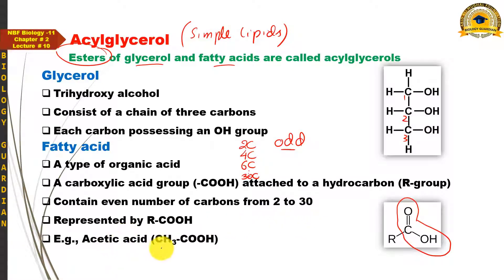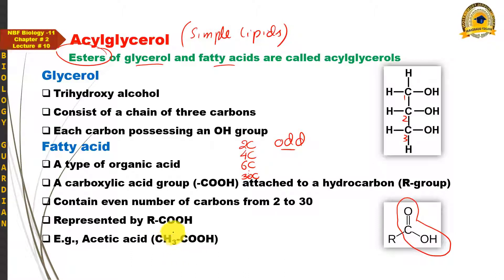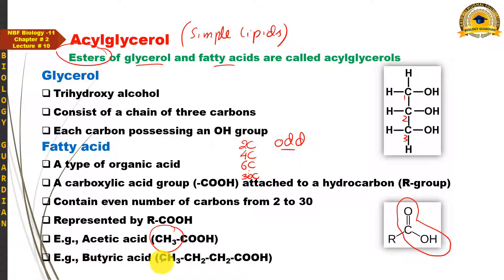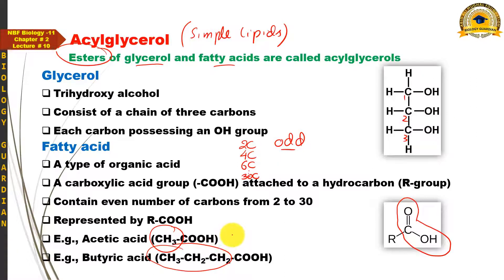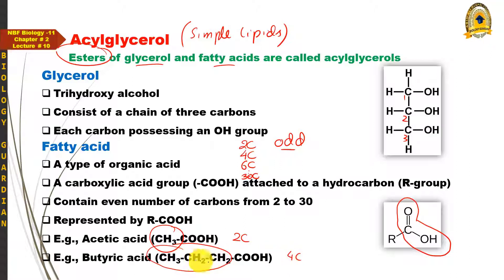Fatty acid کی simple examples دیکھیں: سب سے simplest fatty acid میں two carbon atoms ہوتے ہیں اور اس کی example ہے acetic acid۔ Acetic acid میں ایک R group ہے اور اس کے ساتھ carboxylic acid group ہے۔ اسی طرح butyric acid اس سے complex fatty acid ہے جس میں R group زیادہ complex ہے۔ Acetic acid میں total carbons two ہیں تو اس کے R group میں single carbon ہوگا، اور butyric acid میں total carbons four ہیں تو R group میں three carbon atoms ہوں گے۔